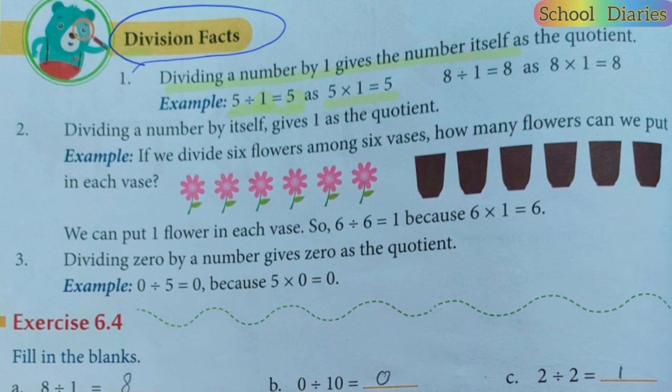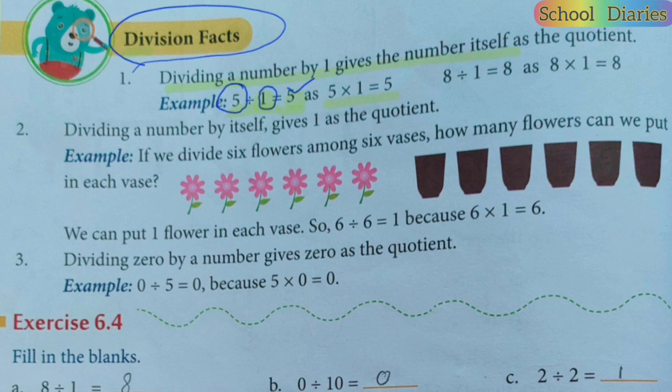It means that if there were five chocolates and you have to distribute them to one child, that child will get the same number — five. So this is why five is coming as the answer. This is Fact Number One.